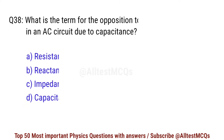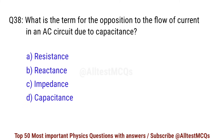Question number 38. What is the term for the opposition to the flow of current in an AC circuit due to capacitance? Right option is B. Reactance.